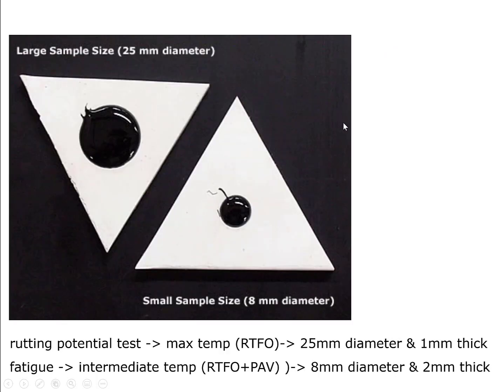This test is used to evaluate both the rutting potential and the fatigue potential of the asphalt binder. The measured complex shear modulus and phase angle are used as predictors to evaluate the possibility of the asphalt binder to have rutting and fatigue cracking. Early in the pavement life, rutting will be the main concern, and later in the pavement life, fatigue cracking becomes the major concern.